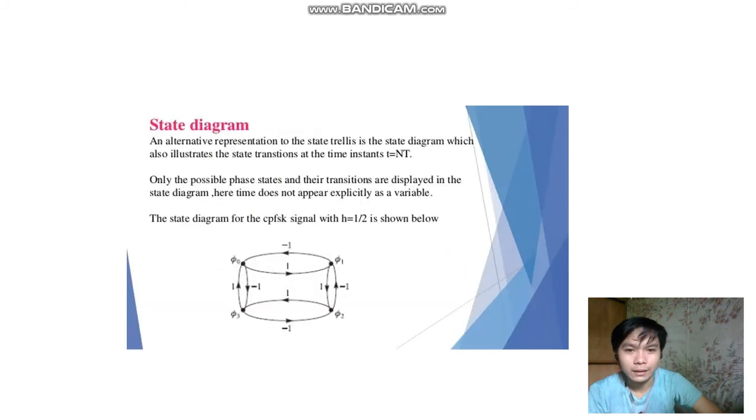This is the state diagram. An alternative representation of the three phases state diagram illustrates the state transitions at time instant t equals nT. Only possible phase states and their transitions are displayed in the state diagram. Time does not appear implicitly as a variable. The state diagram for CPFSK signal with H equals 1/2.